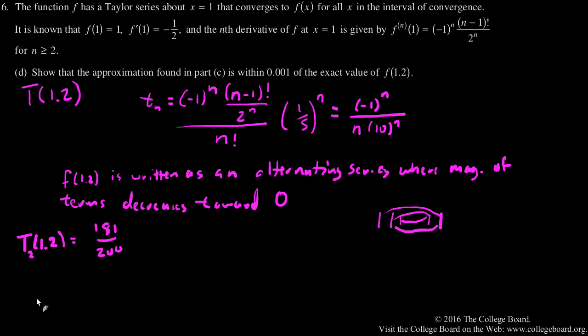And we know that based on this information, the difference between the actual value of f(1.2) and the current approximation T sub 2 of 1.2 has to be less than or equal to - since they're actually decreasing - the third term of my series, the third degree term.